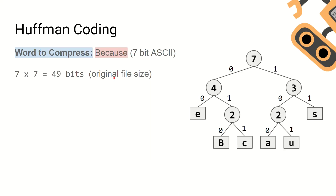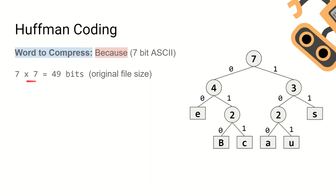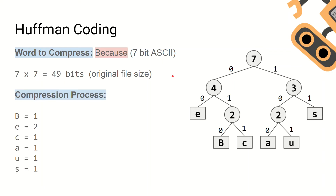Now we're going to look at how we can use Huffman trees to compress text — specifically how many bits you can save when you compress the word 'because'. We're using 7-bit ASCII to work out the original file size, so the original file size will be 49 bits. In the Huffman encoding process, the first thing you need to do is work out the frequency of all of the characters in the word 'because'.